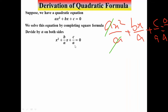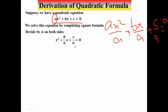Now in the completing the square formula, all constant terms should be on the right side of the equation. So we move c/a to the right side: x² + (b/a)x = -c/a.